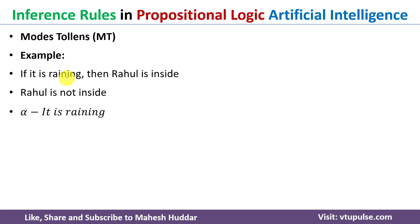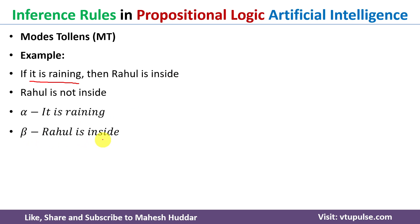We convert these into primitive statements. Alpha is 'it is raining' and beta is 'Rahul is inside.' 'Rahul is not inside' is the negation of beta. Converting to propositional logic, we get alpha implies beta for the first statement, and negation of beta for the second.